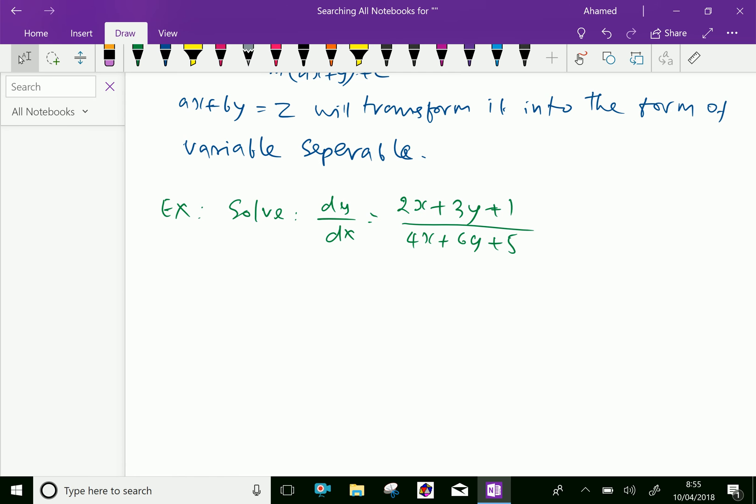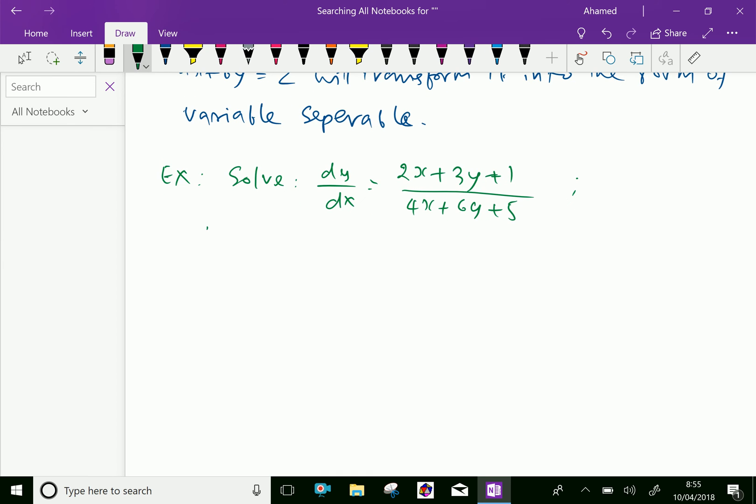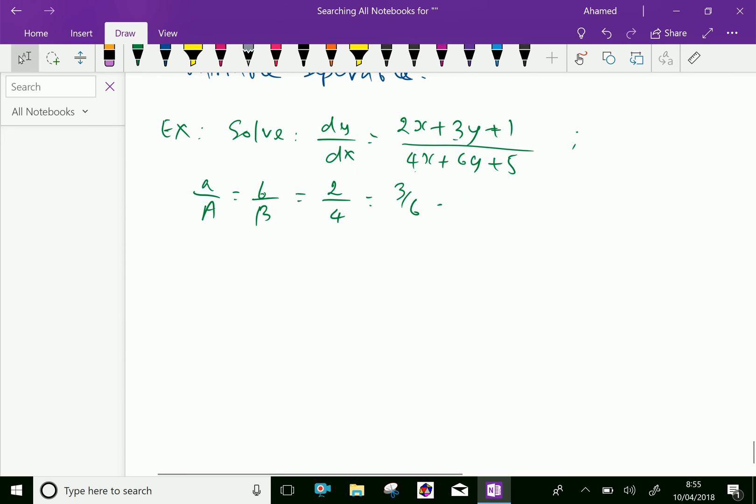Here, remember a/A equals b/B, which means 2/4 equals 3/6. So this is the case of failure. For that, we have to put 2x + 3y equals z.